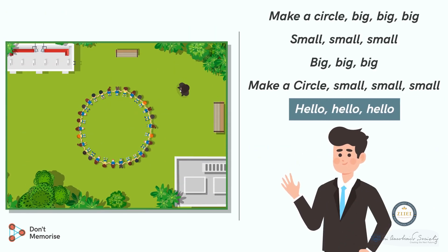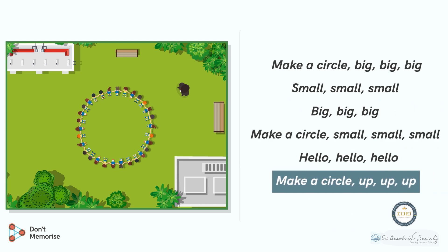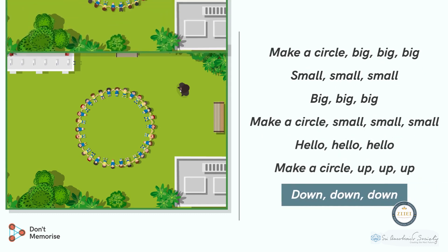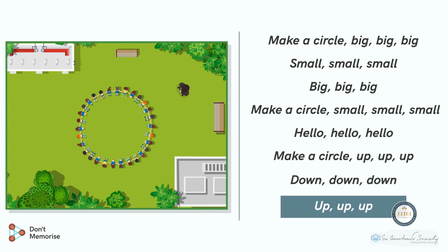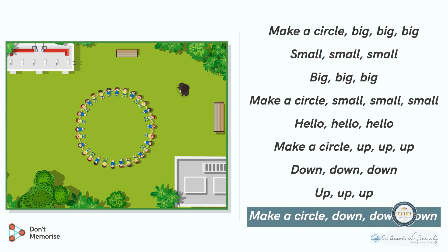Hello, hello, hello — enact this by waving our hands to say hello thrice. Make a circle, up, up, up — joining hands in a circle, let's move our hands up. Down, down, down — joining hands, let's move our hands down together. Up, up, up — let's move our hands up together again while joining hands. Make a circle, down, down, down — joining hands, let's move our hands down together.